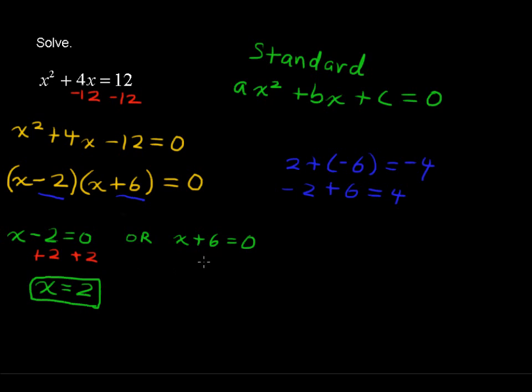But you also have this other mini equation that is also a solution. So we'll subtract 6 from each side to solve this. And that gives us a result of x equals negative 6.